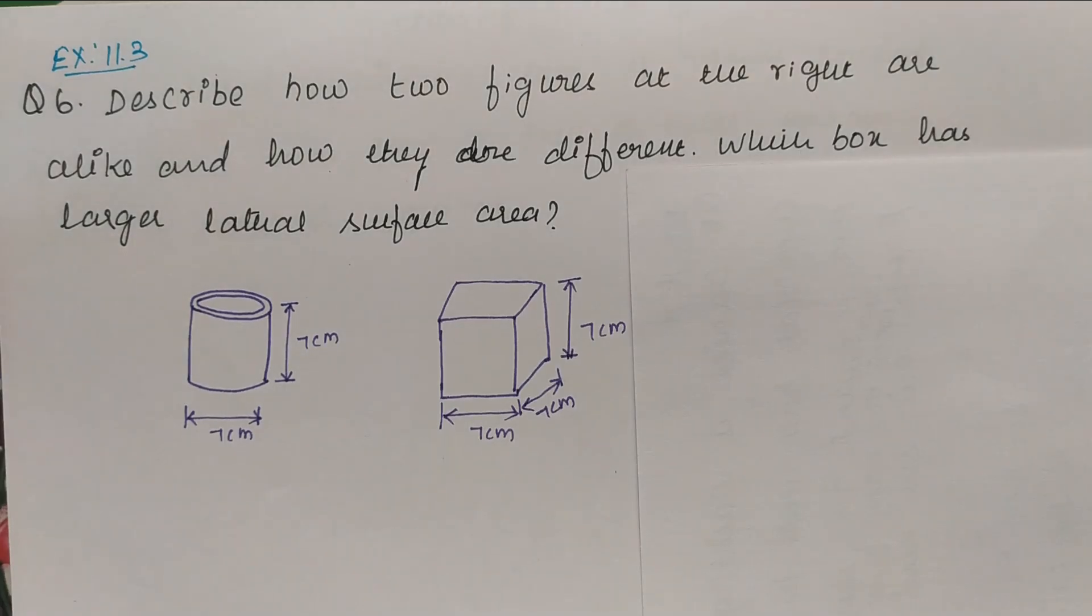Question number 6. Describe how two figures at the right are alike and how they are different. Which box has larger lateral surface area?